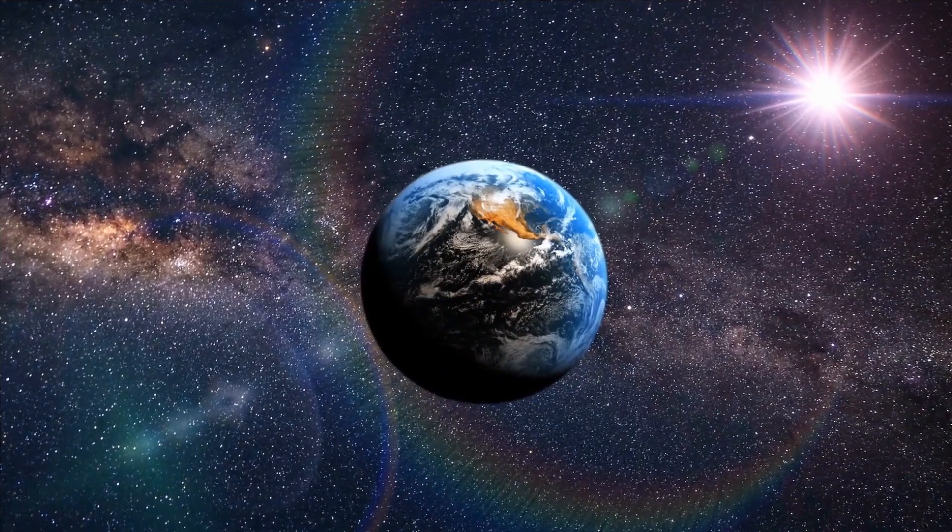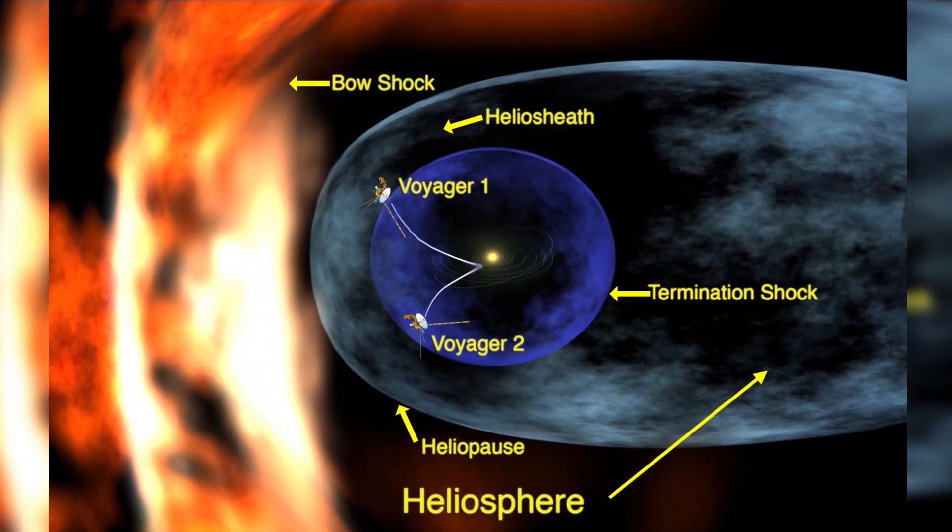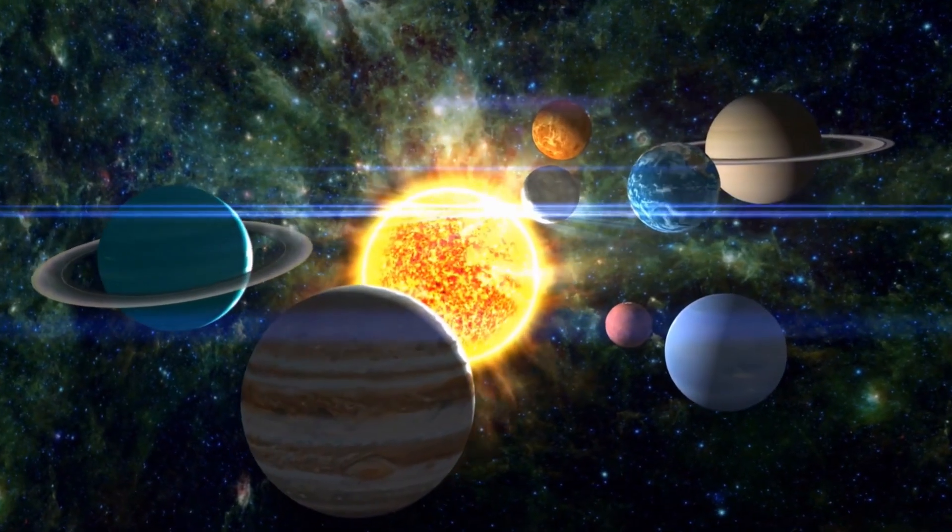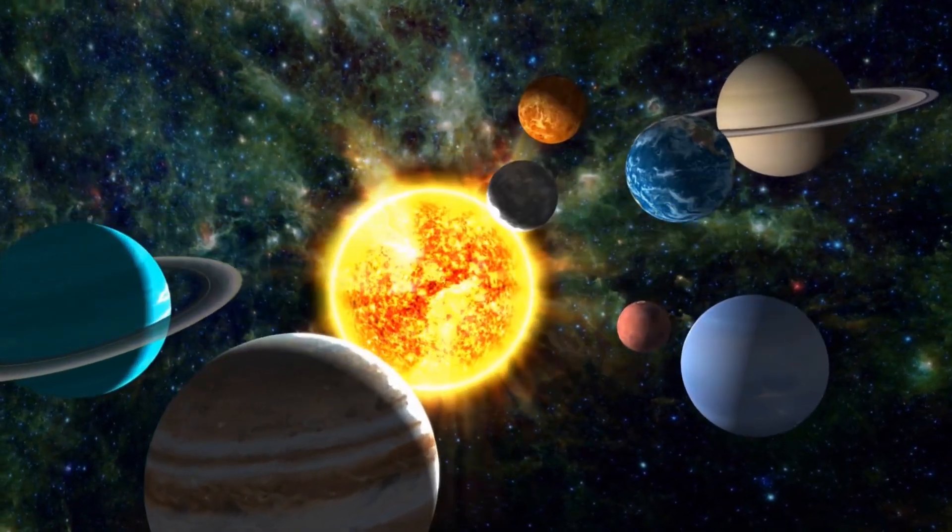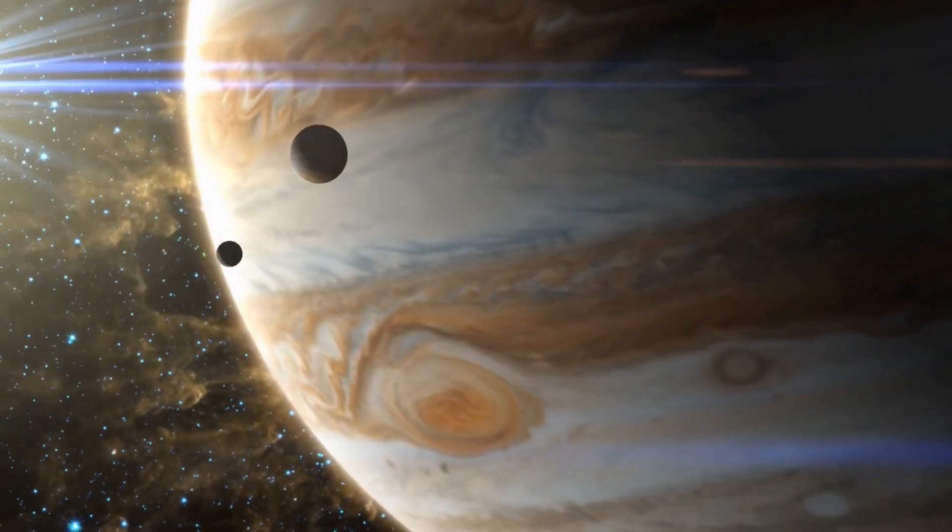Even though Voyager 2 was the first one to launch from Earth, the route it took to the stars meant it would be the second in the race to reach the heliosphere. The scope of the mission was to study the outer part of the solar system and gain knowledge about the outer planets and their moons.